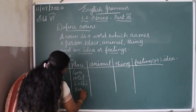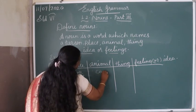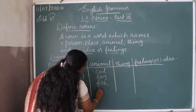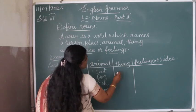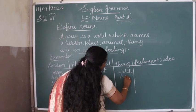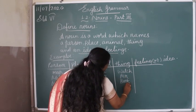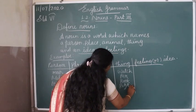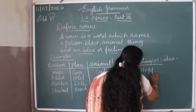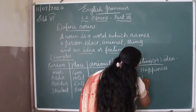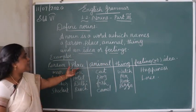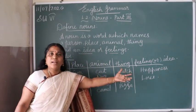For animal: cat, dog, fish, camel. For thing: watch, pen, book, pizza. And for feelings: happiness, love. So these are the examples of person, place, animal, thing, and feeling or idea.